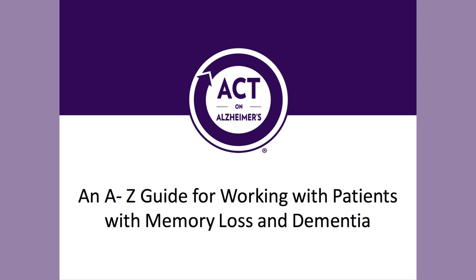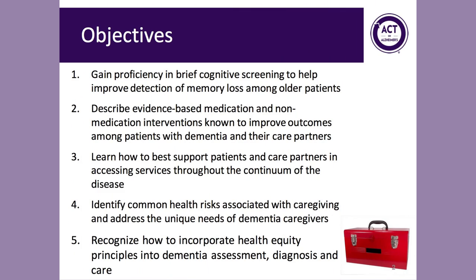Welcome to an A-Z guide for working with patients with memory loss and dementia. The objectives of this session are to gain proficiency in brief cognitive screening to help improve detection of memory loss among older patients, to describe evidence-based medication and non-medication interventions known to improve outcomes, to learn how to best support patients and care partners in accessing services, to identify common health risks associated with caregiving and address the needs of caregivers, and to recognize how to incorporate health equity principles into dementia assessment, diagnosis, and care.